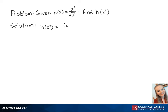So we get x squared squared over the square root of x squared. This is equal to x to the fourth power over x, and this is because x has to be greater than zero. This is equal to x cubed, and this is the final answer.